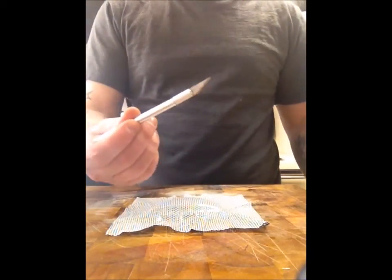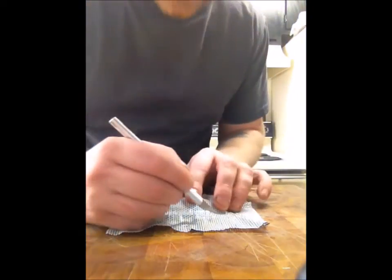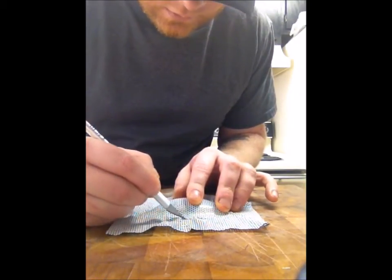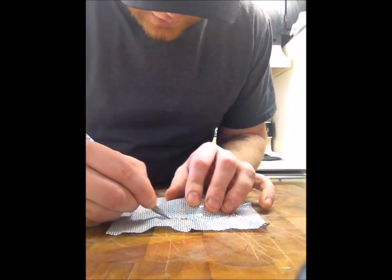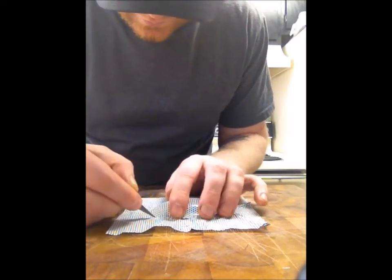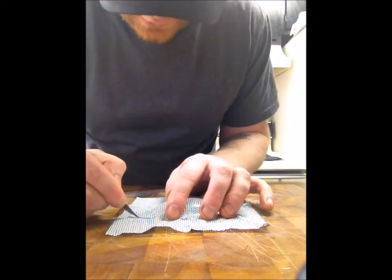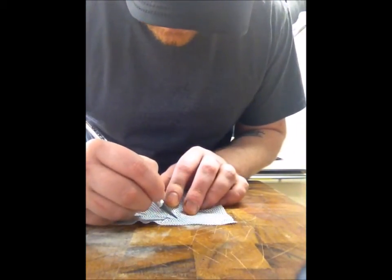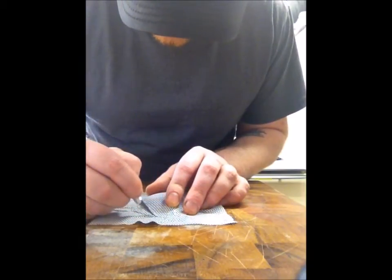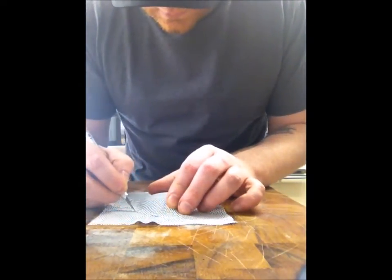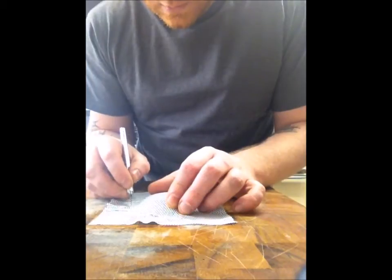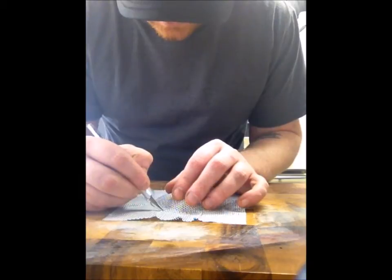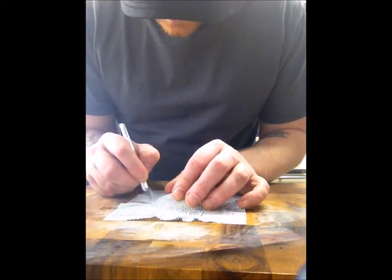And then I take an X-Acto knife, and I basically just cut around. I just follow the line at the edge of the dome itself. And let's see here, there we go. Okay. Whatever excess pieces are off on the edges, you can just cut them down as you see fit. And there you go.